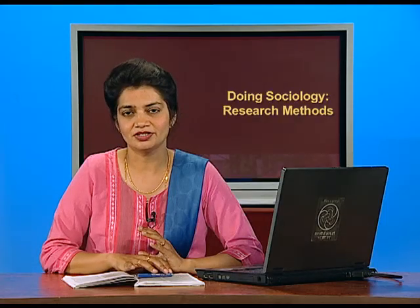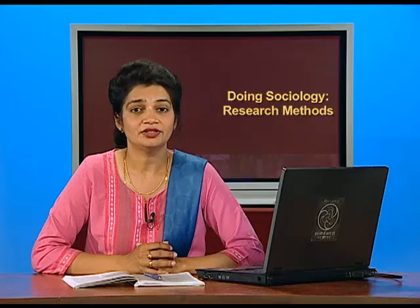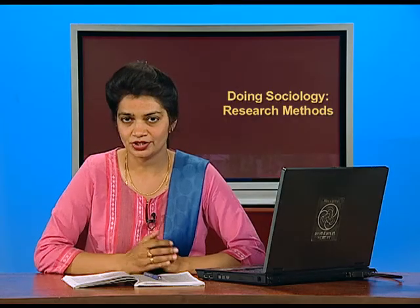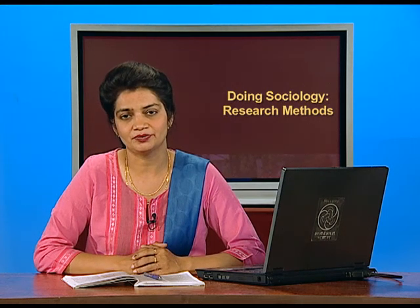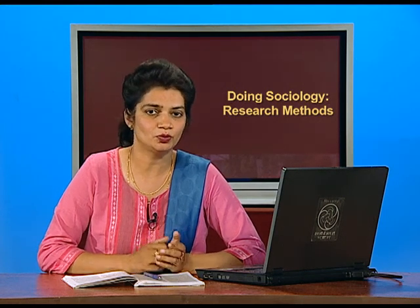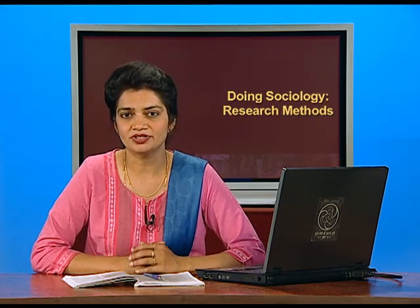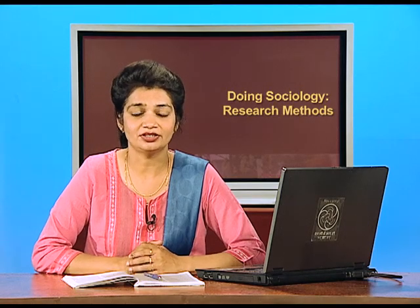To conclude, let us summarize what we discussed here. We discussed research methods and types of research methods within the categories of primary quantitative, primary qualitative, secondary quantitative, and secondary qualitative. We covered the advantages and disadvantages of official statistics, questionnaire and structured interviews together, unstructured interviews, and participant observation including both overt and covert types. In the next part of this chapter, we will discuss about sampling, triangulation, and the process of research. Till then, you can enjoy reading this part of the chapter. Thank you.